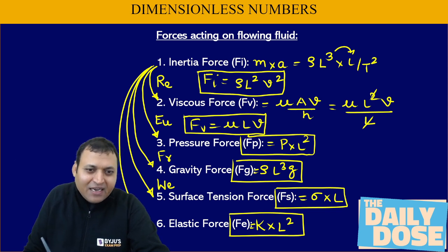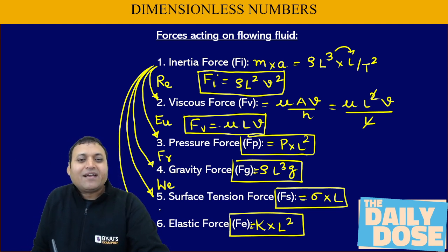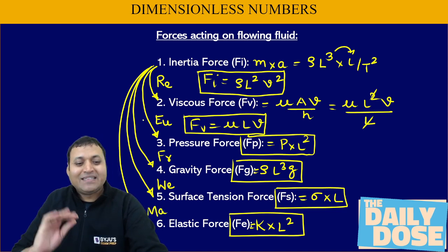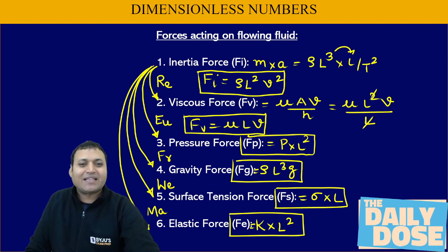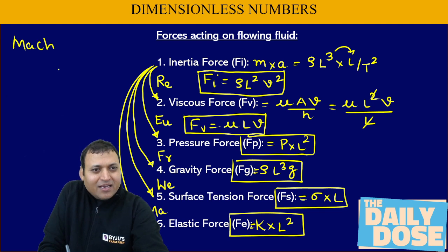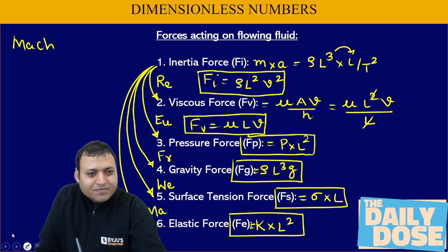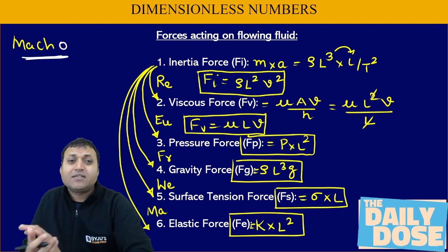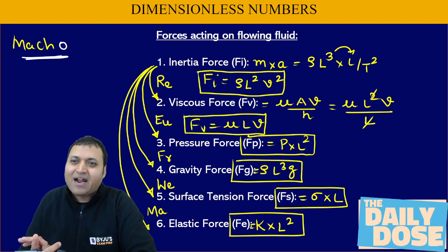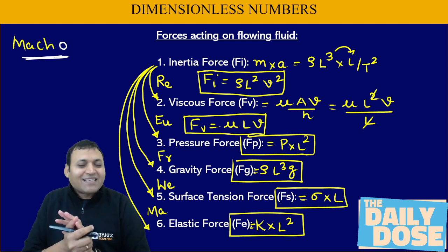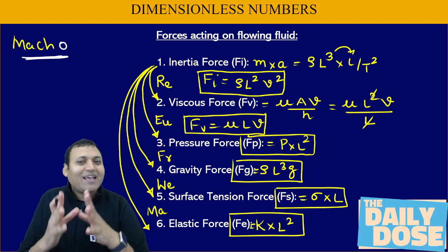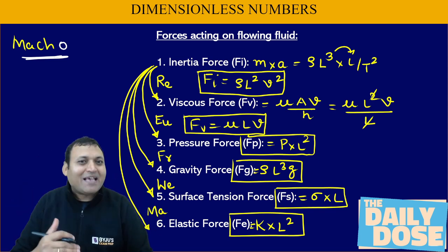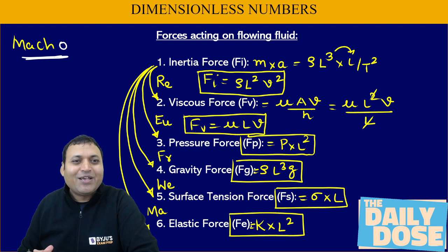Last but not the least, the ratio of inertia force by elastic force gives the Mach number. These tricks are only to memorize. If we write 'Mach' and add an O at the end, it becomes 'Macho' — a very well-known undergarments brand, and in undergarments elasticity is very crucial. So whenever elastic force comes into the denominator and inertia force remains in the numerator, that gives the Mach number.